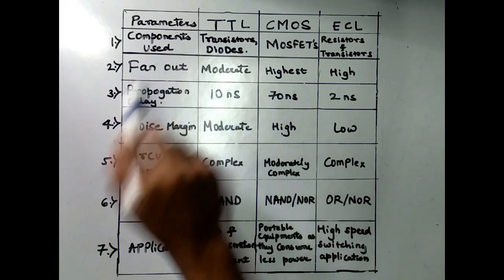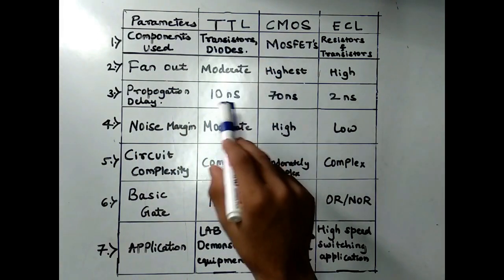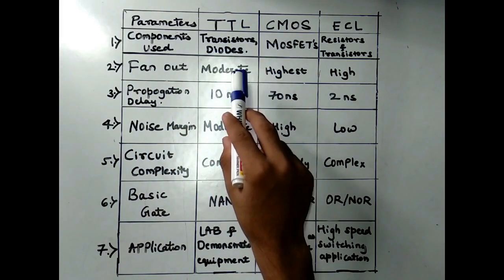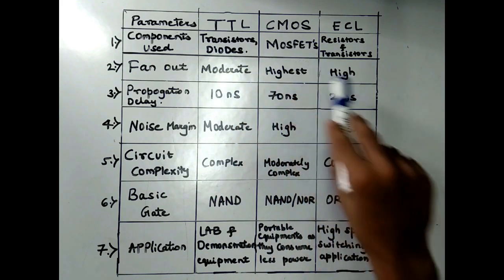The first parameter is Components Used. The components used for TTL are Transistors and Diodes. The components used in CMOS are MOSFETs, and the components used in ECL are Resistors and Transistors.